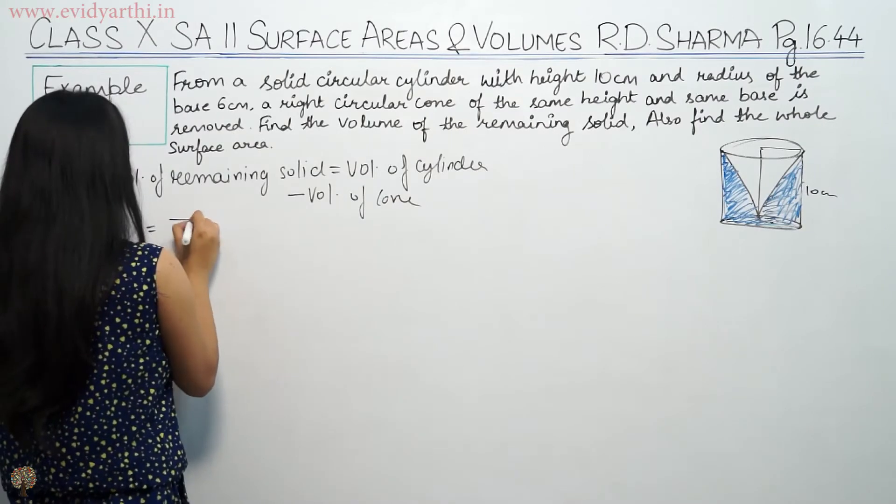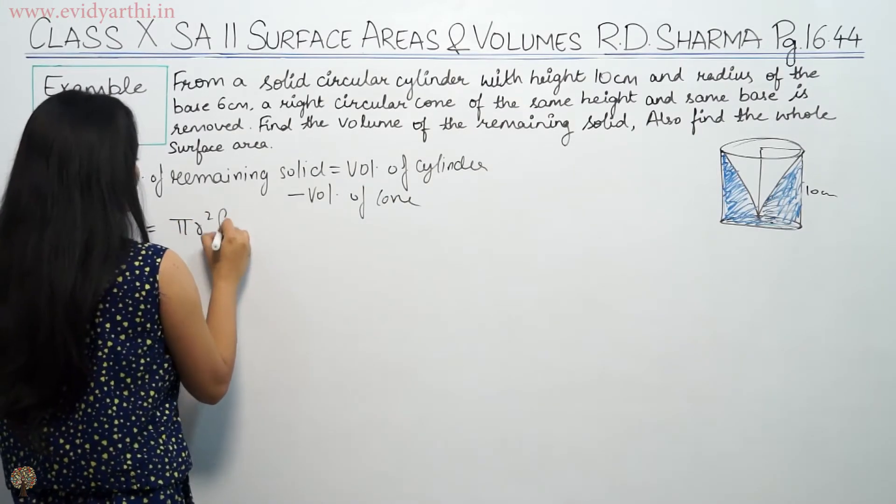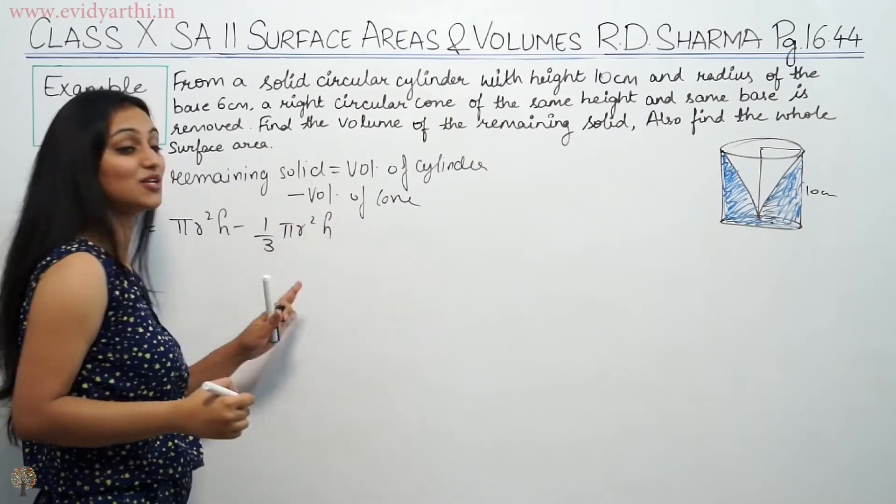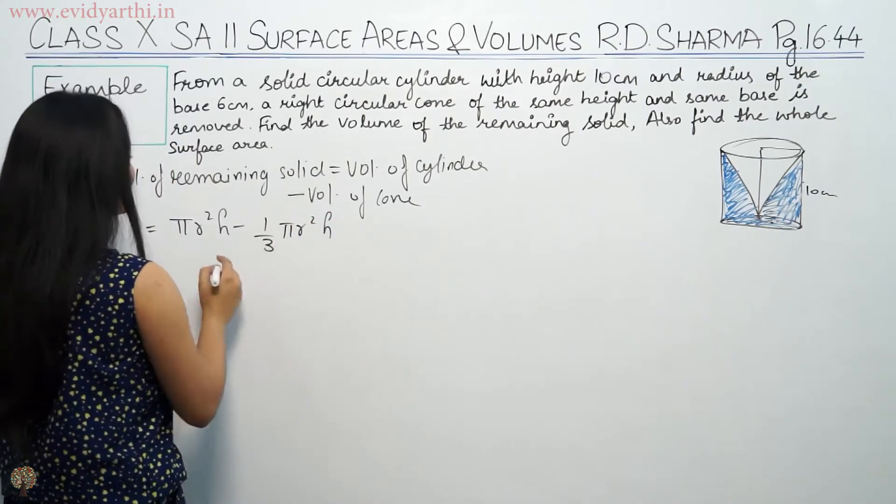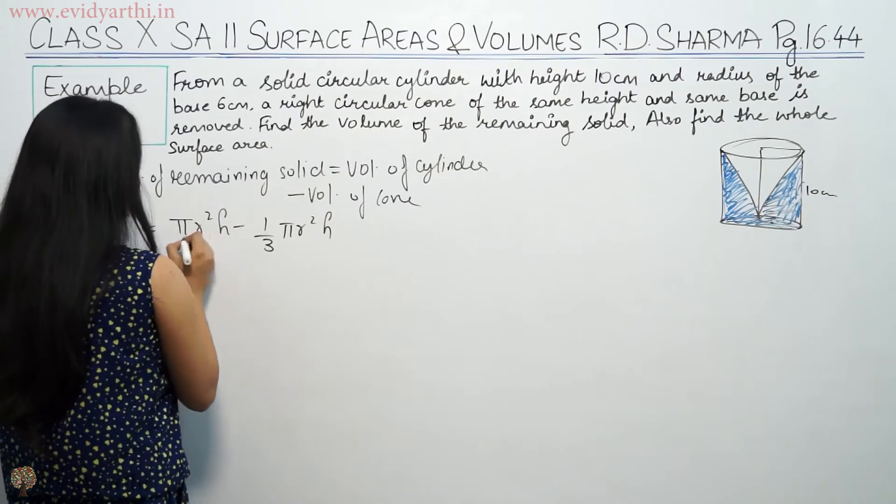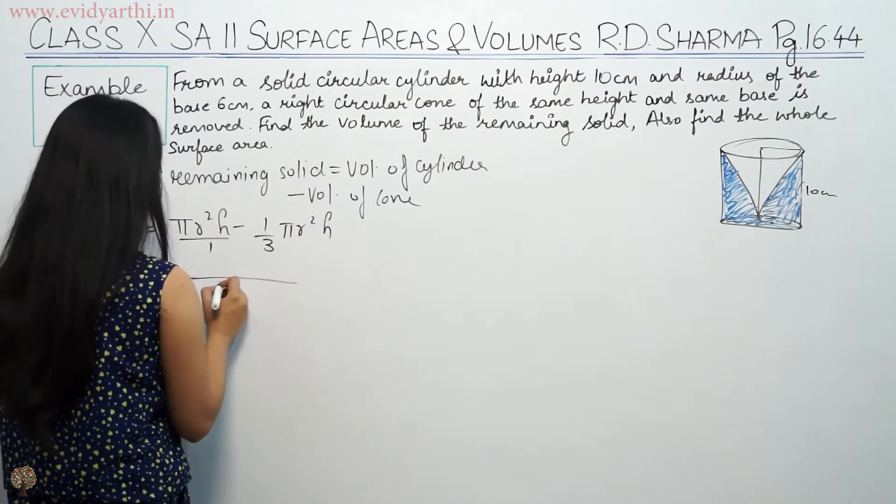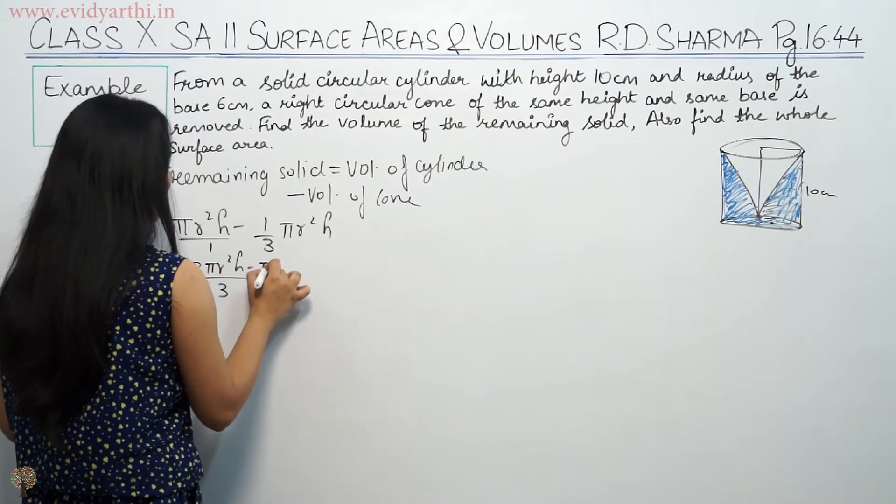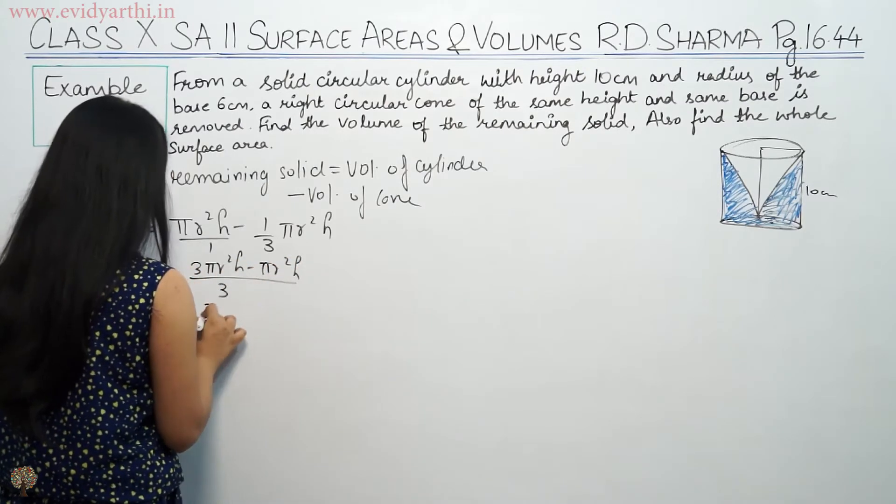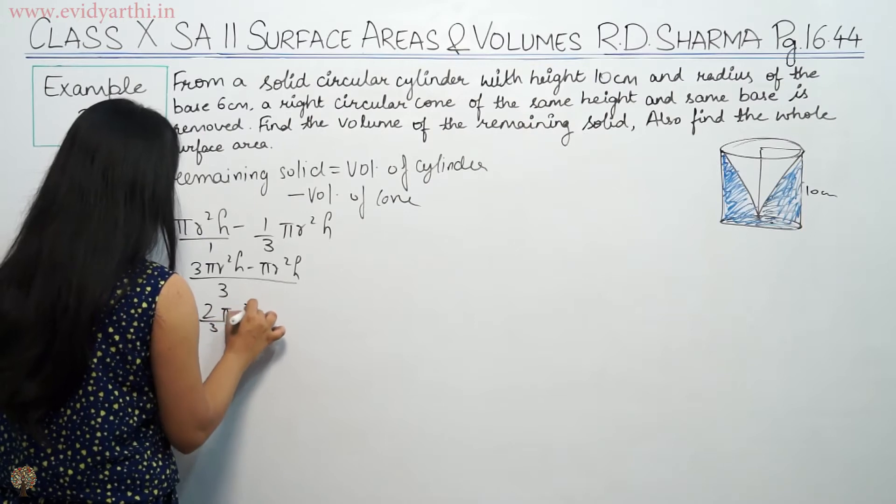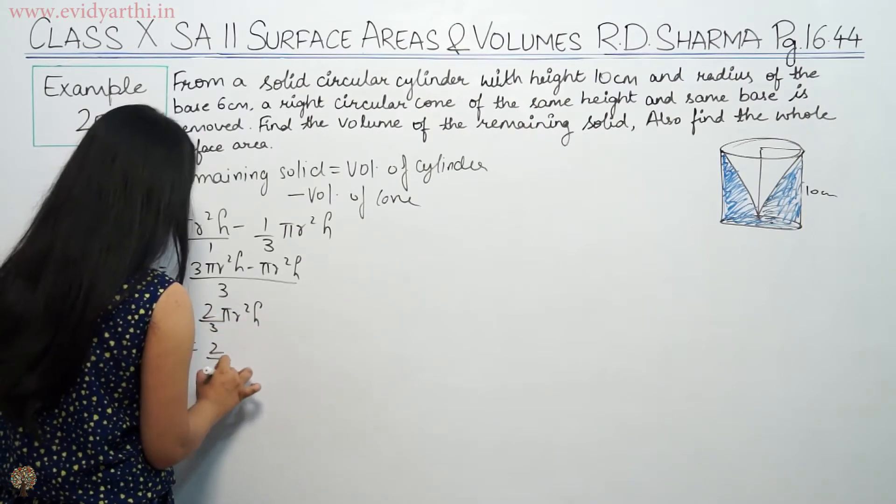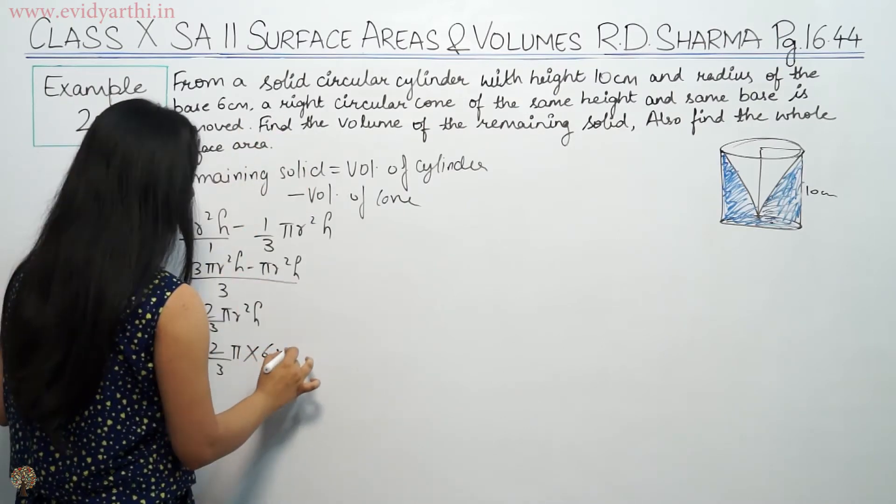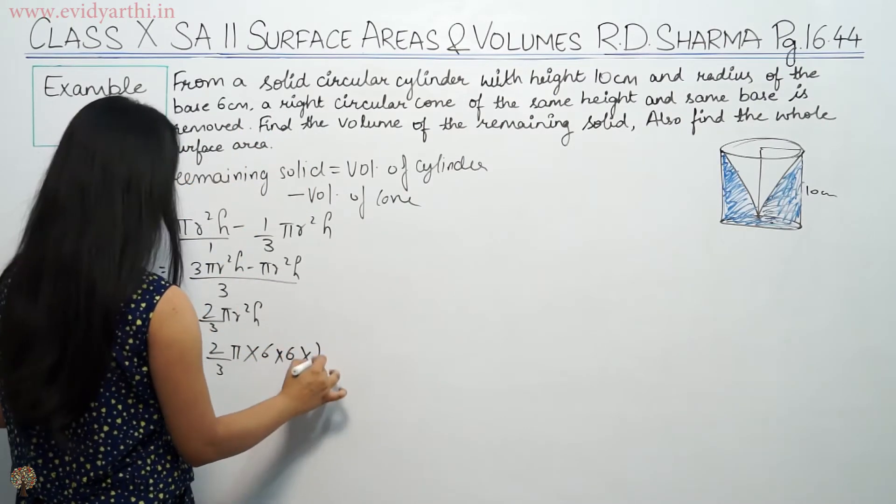Cylinder volume is πr²h and cone volume is 1/3 πr²h. Since height and radius are the same, this gives us πr²h - 1/3 πr²h = 2/3 πr²h. That means 2/3 π times radius 6 squared times height 10.